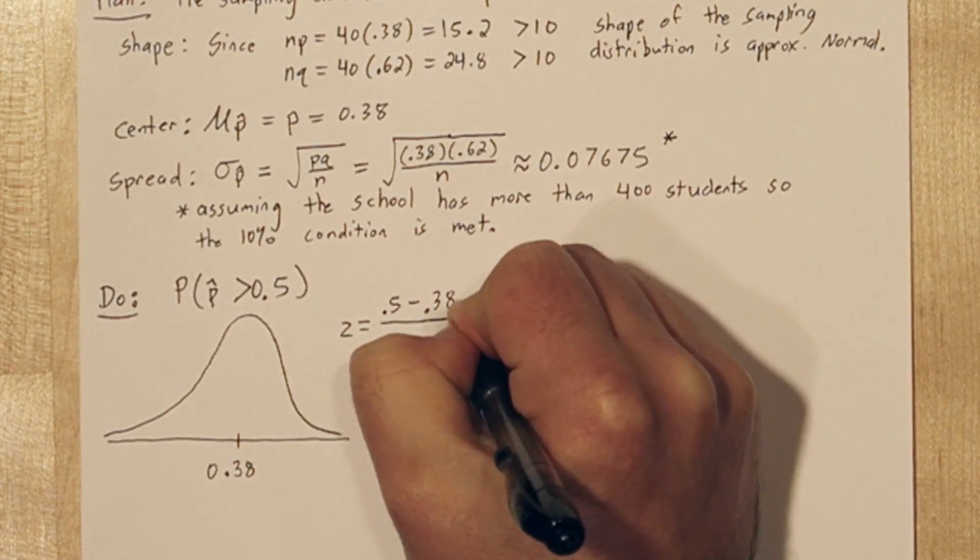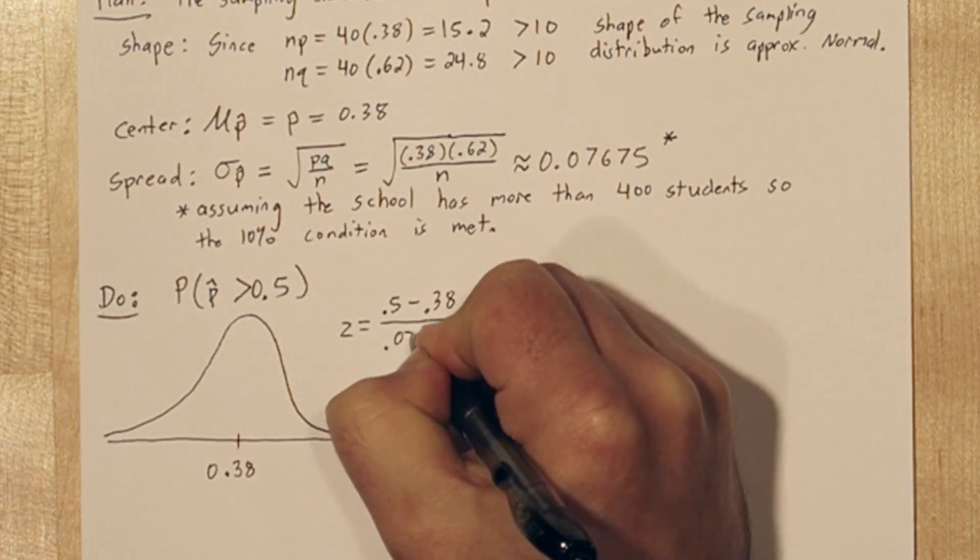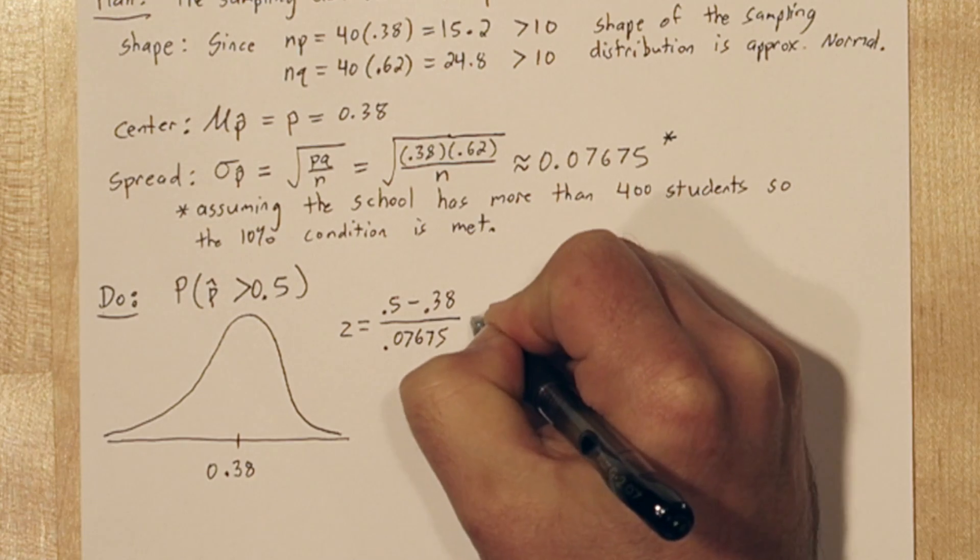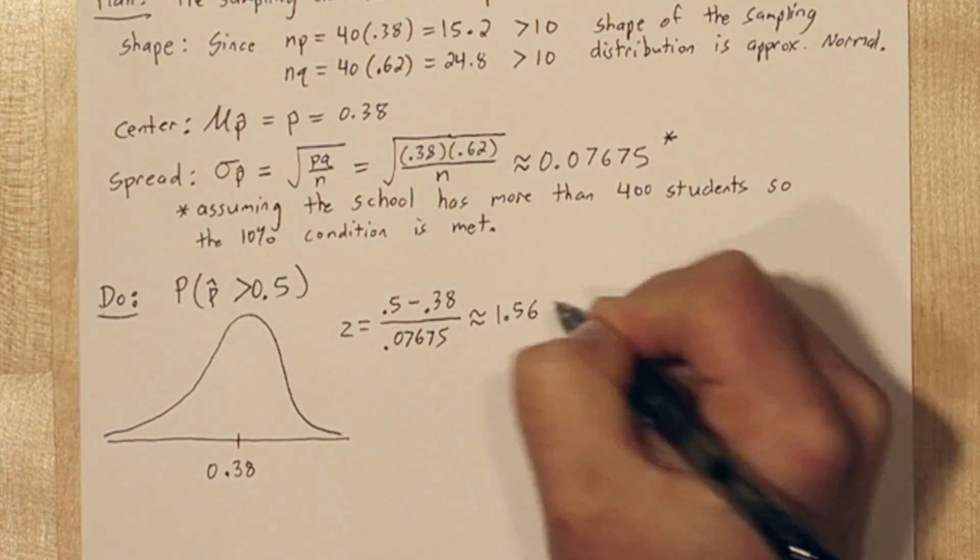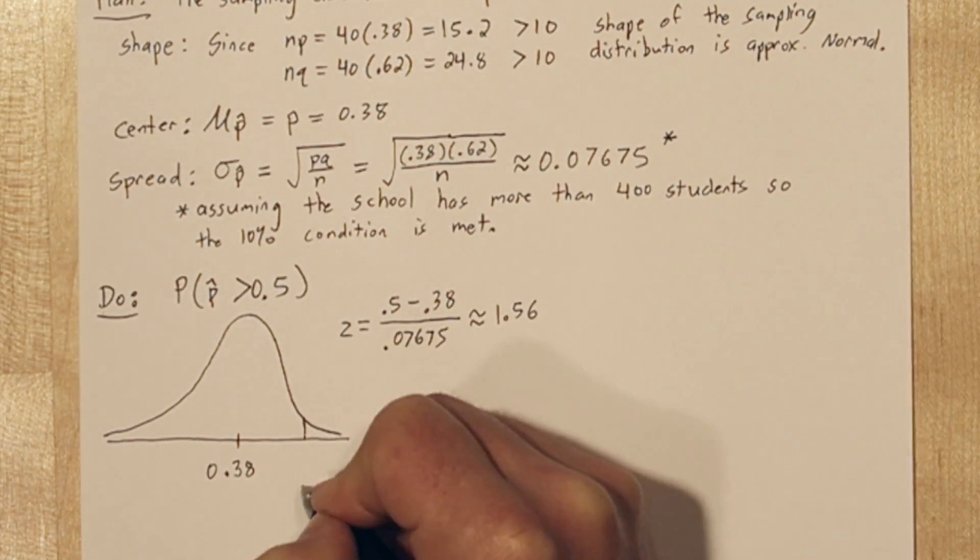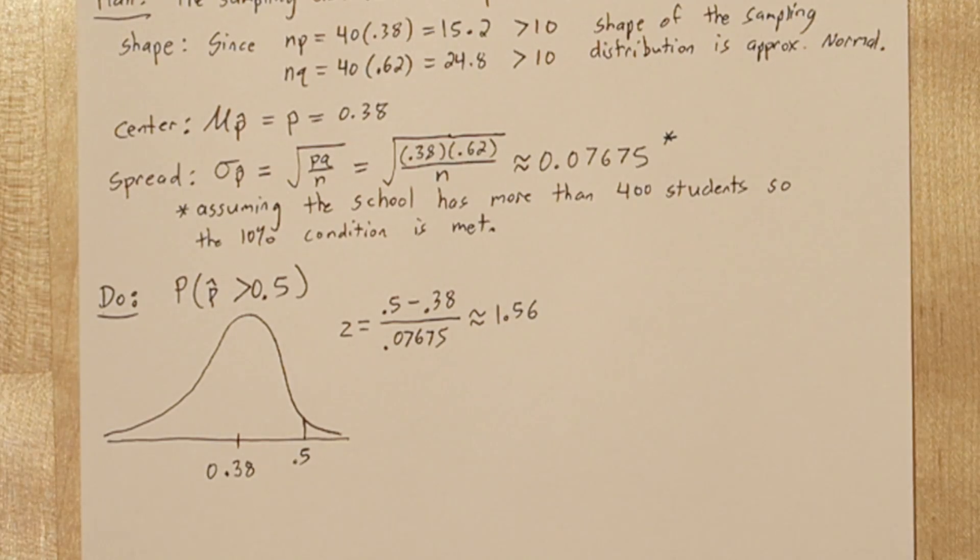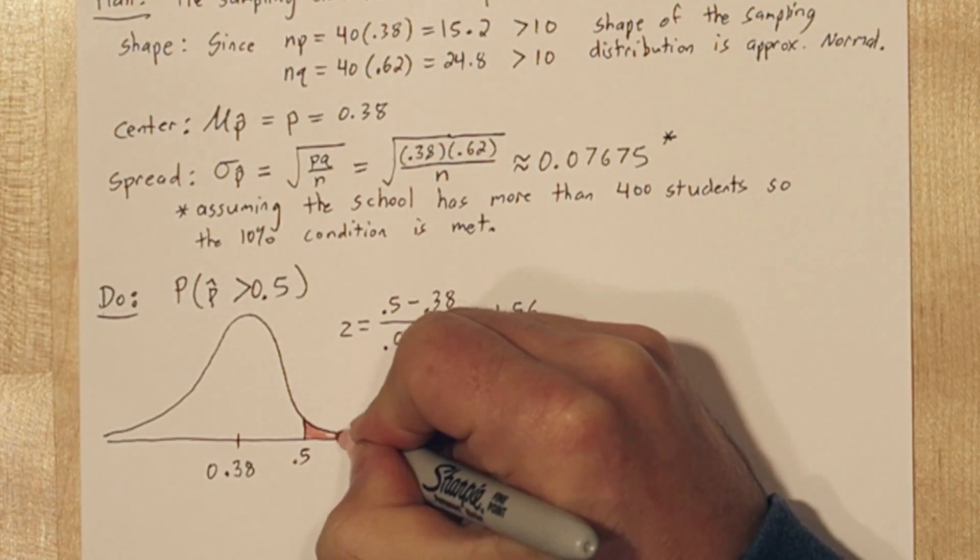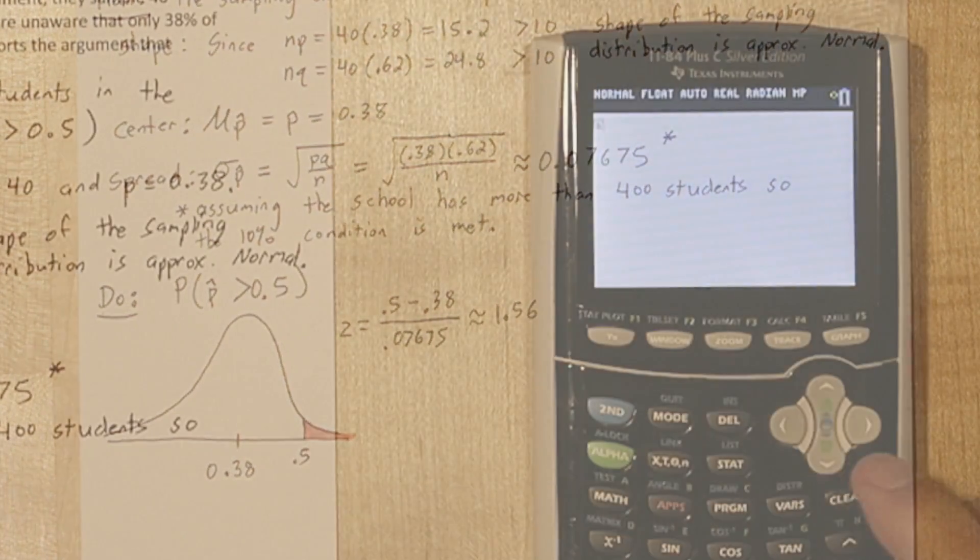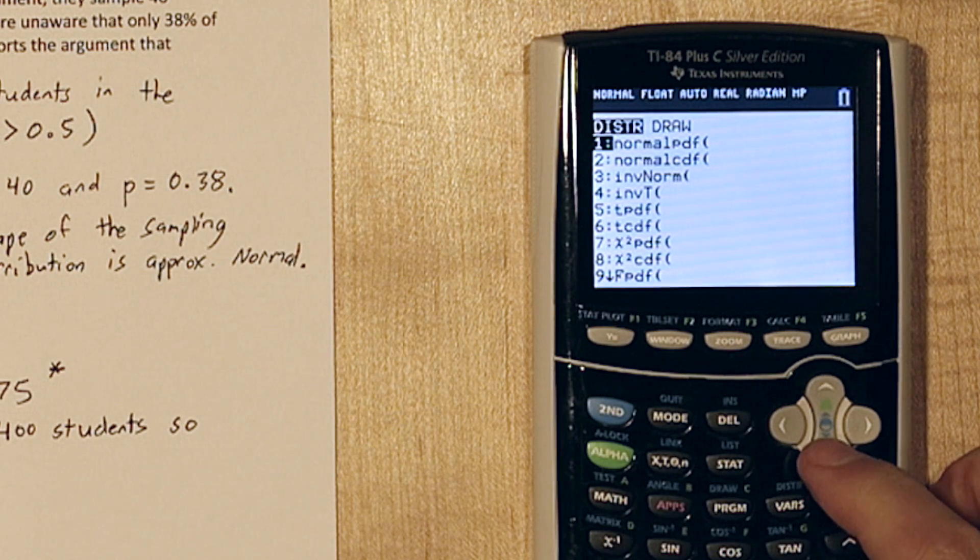Our z-score is 1.56, so 0.5 is 1.56 standard deviations above the mean. That's about right here. Let's shade everything greater than that. The shaded area under the curve is equivalent to the probability we're trying to find.